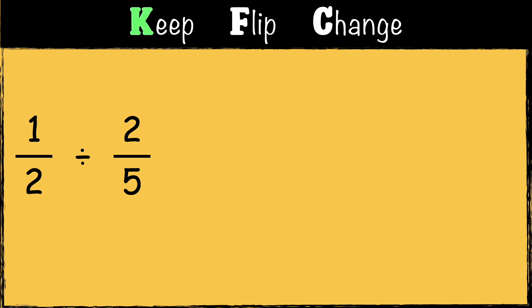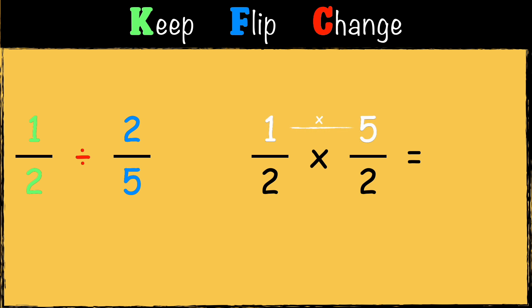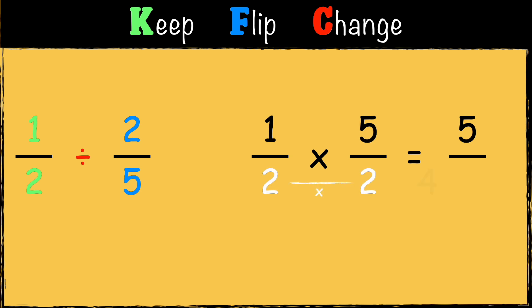First we have Keep — we keep the first fraction as it is: one-half. Next we have Flip — two-fifths becomes five over two. Finally we have Change — we change the calculation from division to multiplication. We multiply the fractions: one times five equals five, and two times two equals four. So the answer is five-quarters.